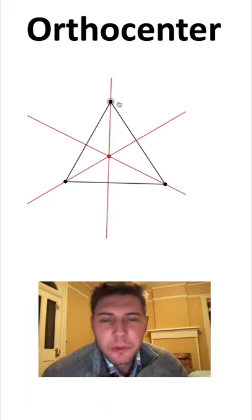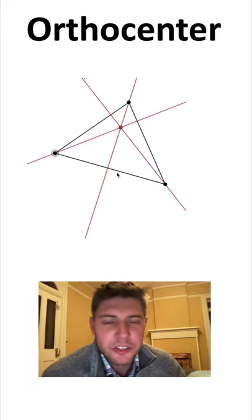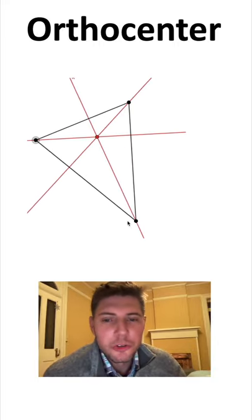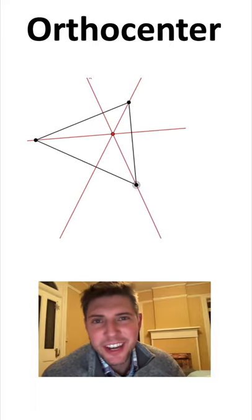And there it is right there. And as we move the triangle around, these altitudes all still intersect at the same point. As long as the triangle is an acute triangle, the orthocenter is on the inside of the triangle.